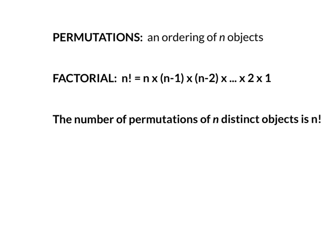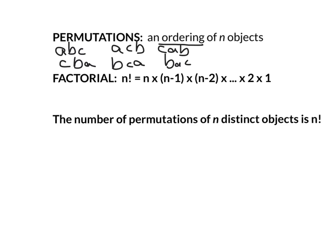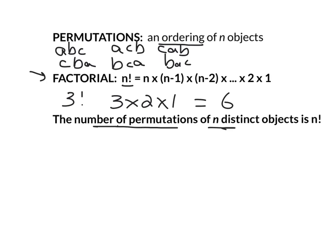Another method of counting is called permutations - counting how many orders or arrangements of something there are. For example, with the letters A, B, and C there are six different arrangements: CBA, ACB, BCA, BAC, CAB, and ABC. The best way to find permutations is with a factorial, written as an exclamation point. Three factorial means 3 times 2 times 1, which equals six. To find how many permutations of n objects there are, you compute n factorial - multiply that number times the next one all the way down to one.